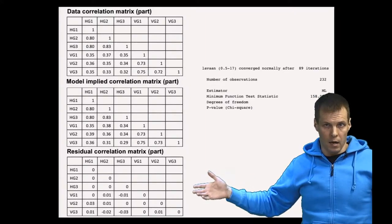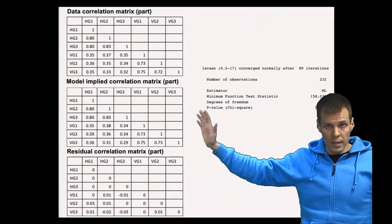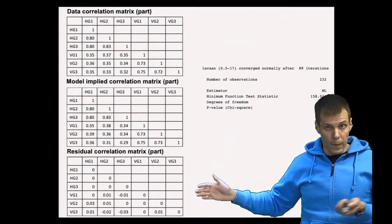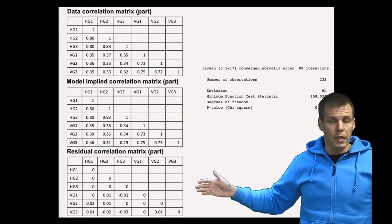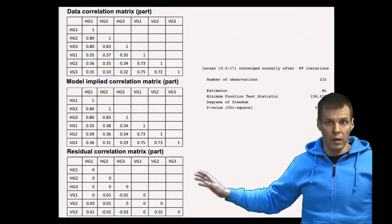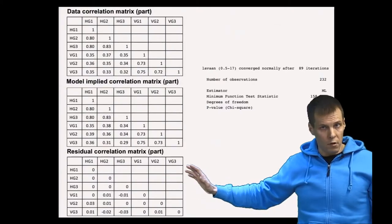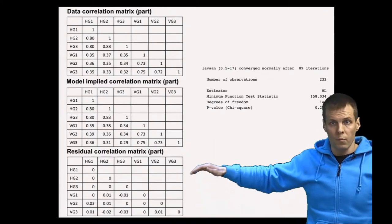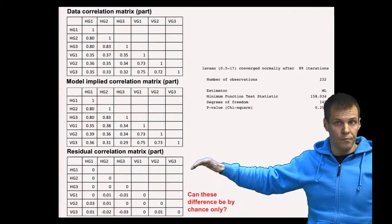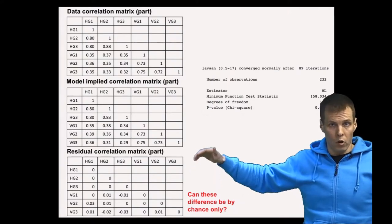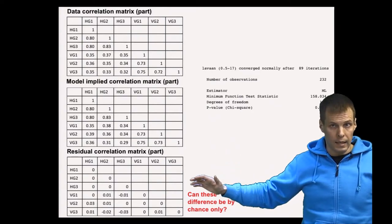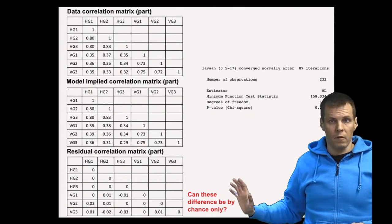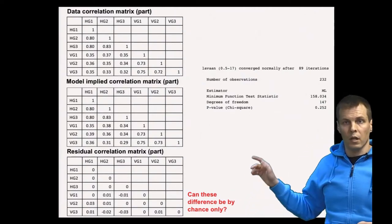We want to know if the model is correct for the population — specifically, whether this model would have produced the population correlation matrix. In small samples, the actual sample correlations are slightly off from population values, so residuals are not exactly zero. We therefore ask: are these differences from zero small enough that we can attribute them to chance? Is it plausible that the model is correct but doesn't reproduce the data exactly because of small sample fluctuations? This is what the chi-square statistic quantifies.